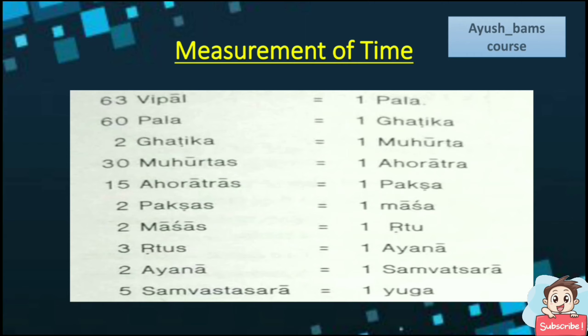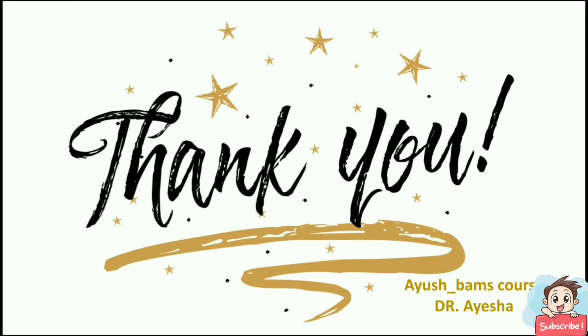The measurement of time: 63 Vipal equals 1 Pala. 60 Pala equals 1 Ghatika. 2 Ghatika equals 1 Muhurta. 30 Muhurta equals 1 Ahoratra. 15 Ahoratras equals 1 Paksa. 2 Paksas equals 1 Masa. 2 Masas equals 1 Rutu. 3 Rutus equals 1 Ayana. 2 Ayana equals 1 Samvatsara. 5 Samvatsara equals 1 Yuga.